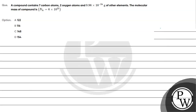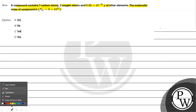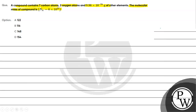Let's read this question. The question says a compound contains 7 carbon atoms, 2 oxygen atoms, and 9.96 × 10⁻²⁴ grams of other elements. The molecular mass of the compound is given that Avogadro's number is 6 × 10²³.